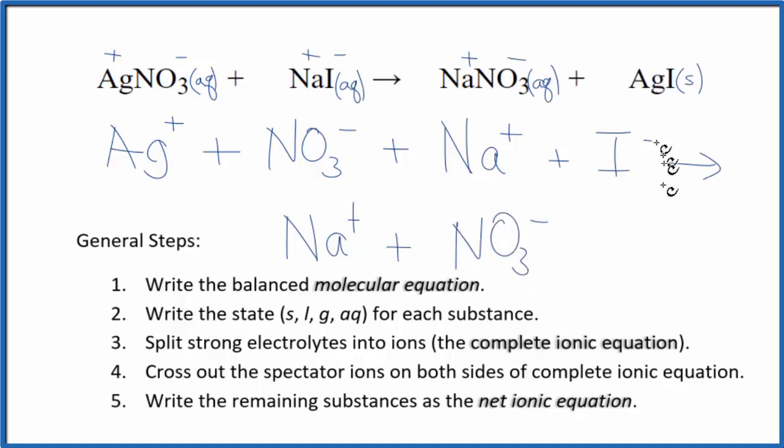We'll have Na plus, and then that NO3 minus. And for the silver iodide, we said, with net ionic equations, this is a solid here. We don't split those apart. So, we just write AgI for silver iodide. And this is the complete ionic equation.